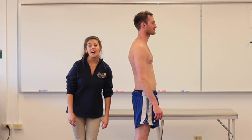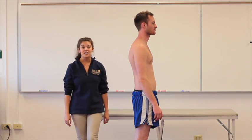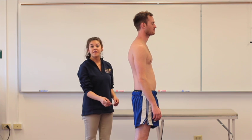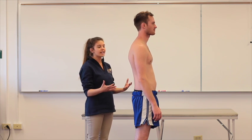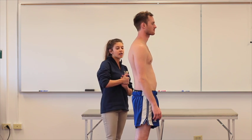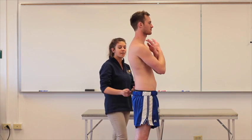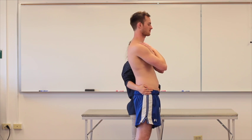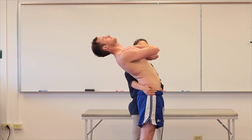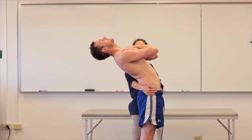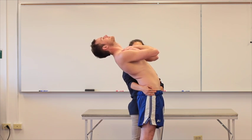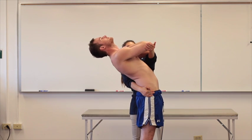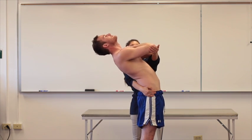We're now going to put Connor into extension for that active range of motion, looking at his movement and making sure he has willingness to move throughout. Connor, go ahead and cross your arms in front of your body and extend back as far as you can, looking up towards the ceiling. Is that as far as you can go? Any pain? No. I'm going to apply some overpressure. Any pain with that? No. Great.